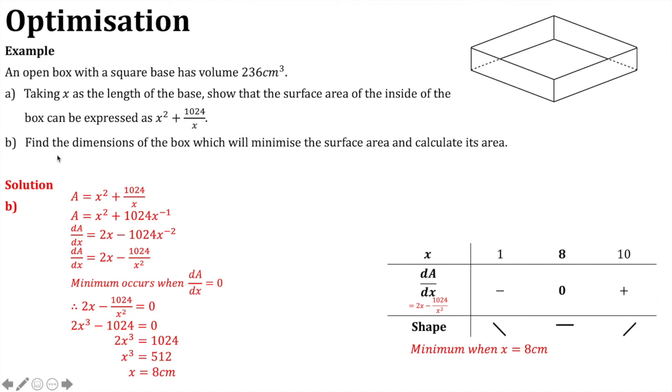Now, we're not finished the question. The question asks us to find the dimensions of the box. We have the dimension of the base. We know that that's 8 by 8. But we don't know the height. From part A, we know that the expression for the height was 236 over x squared. So, if we substitute x equals 8 in, that gives us that h is 3.6875 centimetres.